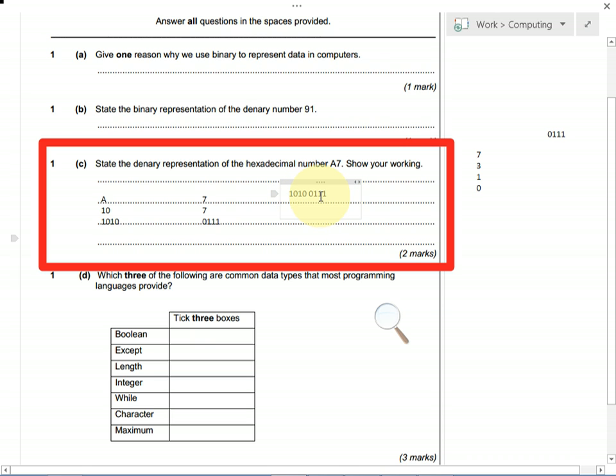Then we can work out how much each bit is worth. So let's start on the right, we get a 1 from this bit over on the right, we get a 2 from the next bit, and we get a 4. We don't have an 8, we don't have a 16, we do have 32, we don't have a 64, but we do have 128.